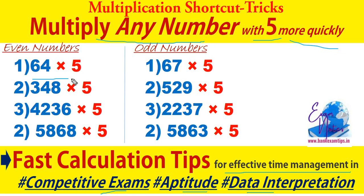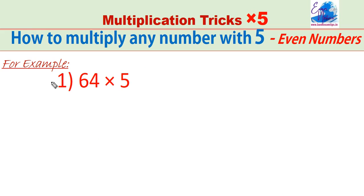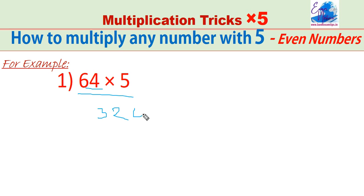The trick is different for even numbers and odd numbers. For example, 64 into 5. The trick is: make it half — that means half of 64 is 32 — and put 0 at the end. 320 is the answer.